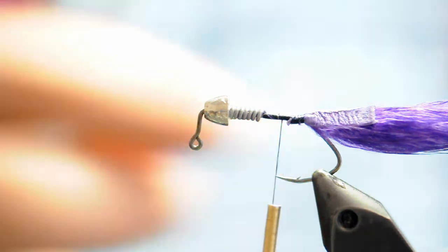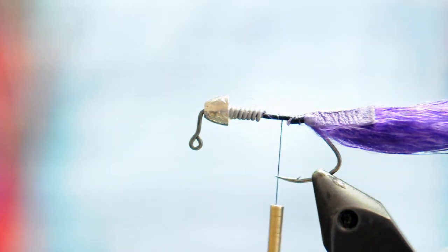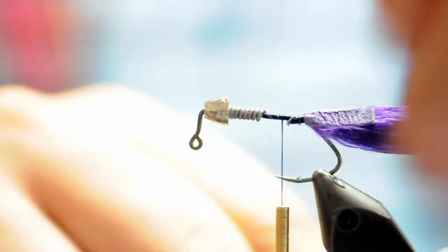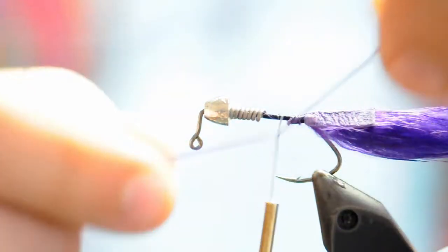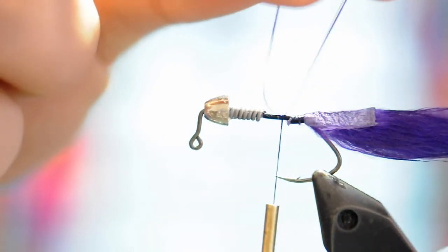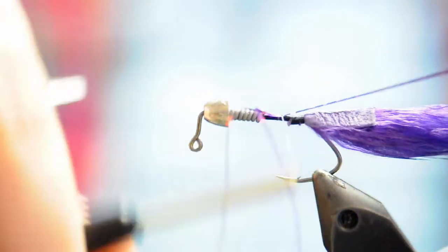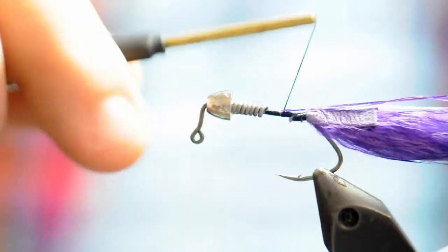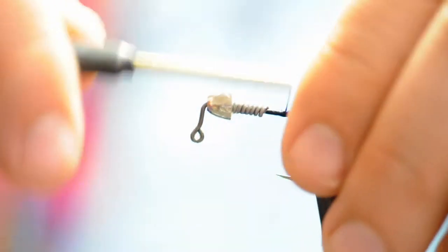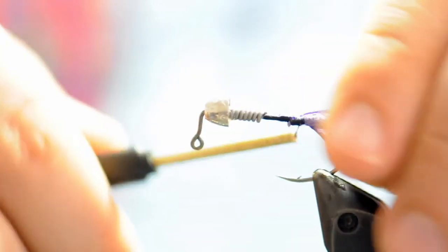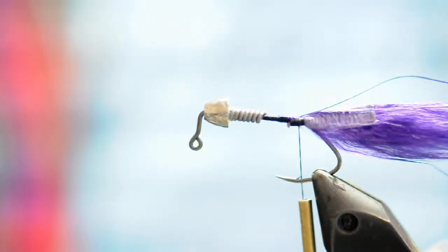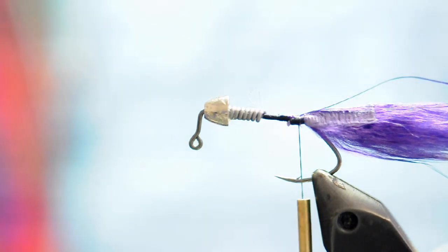Next I'll cut a single strand of purple flashaboo in half. And then I'll take that flashaboo and slide it under my last wrap of thread so that I'll be binding the flashaboo in the middle of the fiber. I'll take a wrap over that and then fold it over itself and wrap several times backwards to position it below what will ultimately be the bottom of the zonker strip.